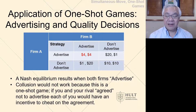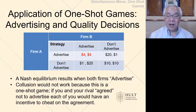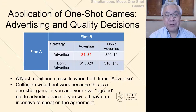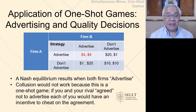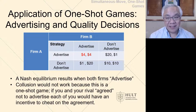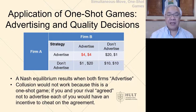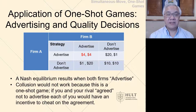However, they look longingly again at the bottom right-hand corner — 10-10. They like 10-10 better than 4-4. This is the opportunity for collusion, where if both would agree not to cheat and both don't advertise, they would both make more money. We'll look again at the idea of cheating, reneging on agreements, and collusion later on.